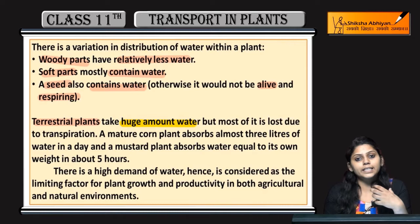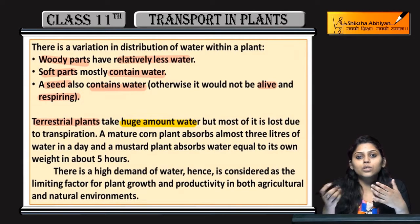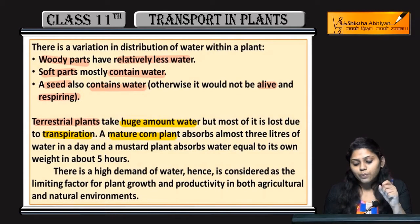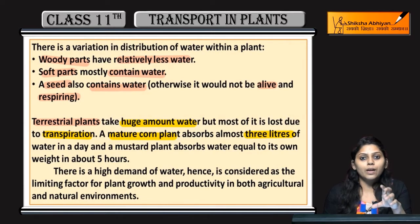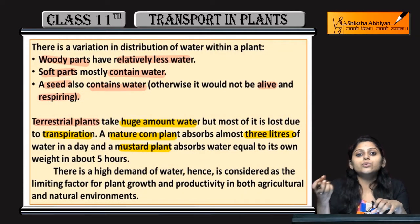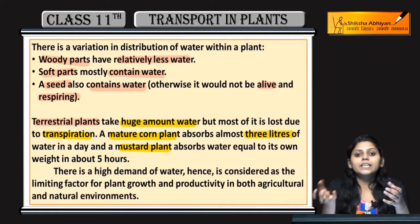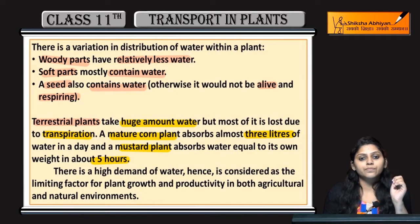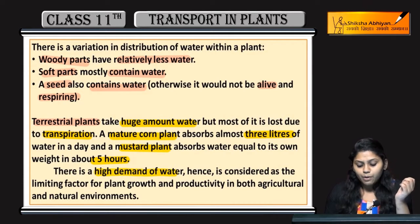Mature corn plants absorb around 3 liters of water in a day. Mustard plants absorb water equal to their own weight within 5 hours only. There is a high demand of water.